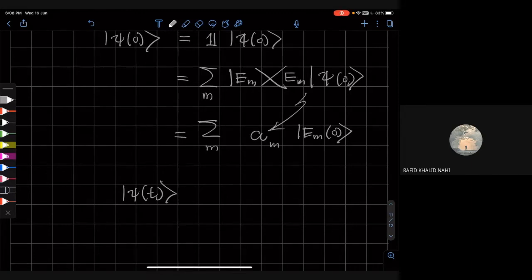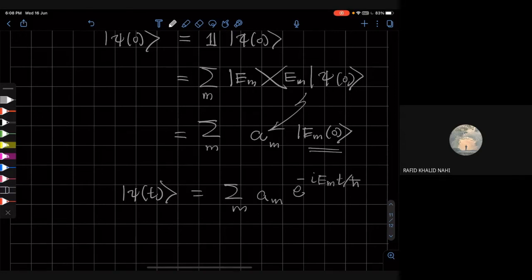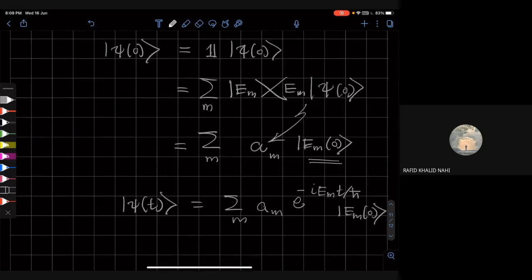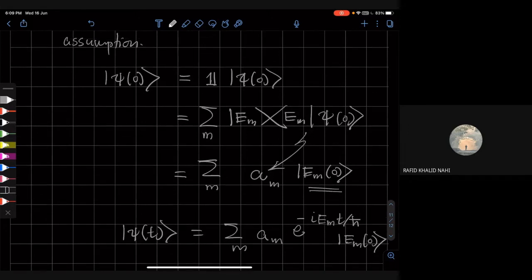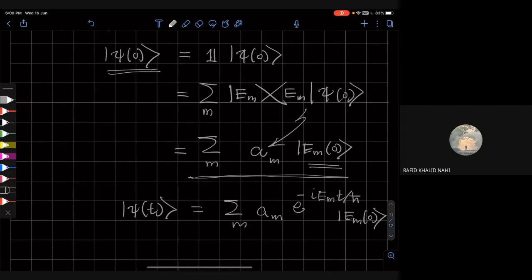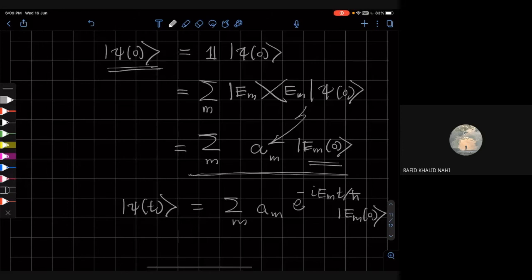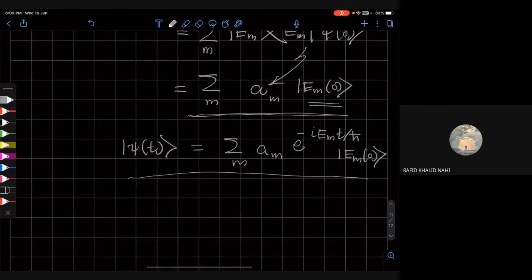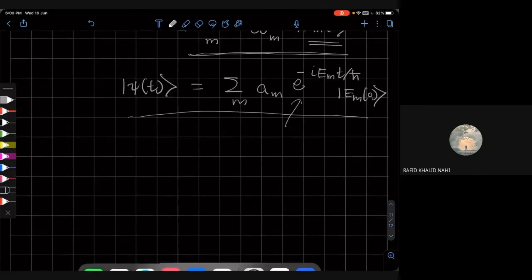Now, we can find out what this state is at a later time t. All we have to do is we just know how this thing evolves in time, and this is simply given by minus e^(-i Em t/ℏ) |Em(0)⟩. So thus we see that if I know the energy eigenvalues and I'm given some state, I can always do a decomposition of the state in terms of the energy eigenstates. And then any future value of the state is just given by that formula, but now with the phase factor inserted.